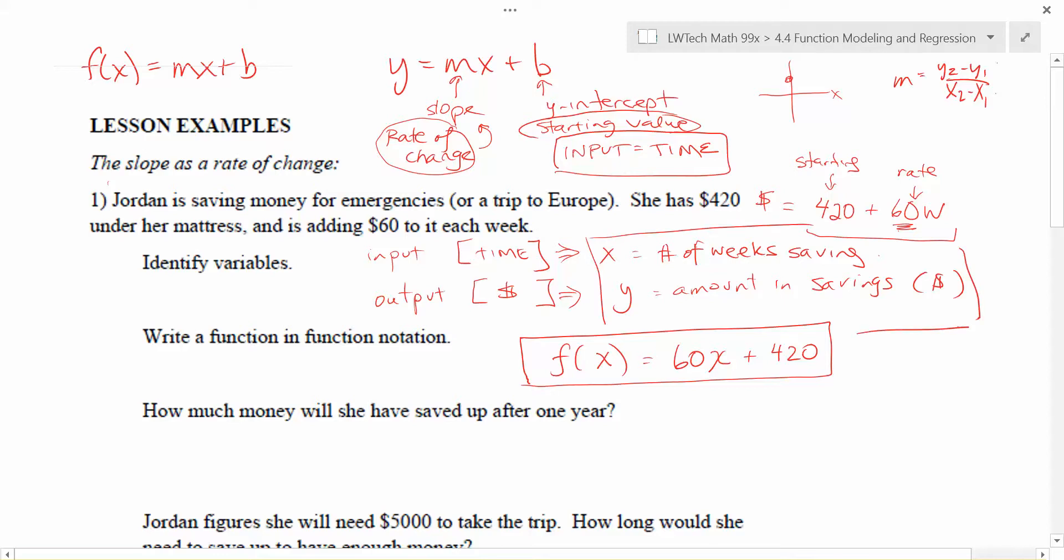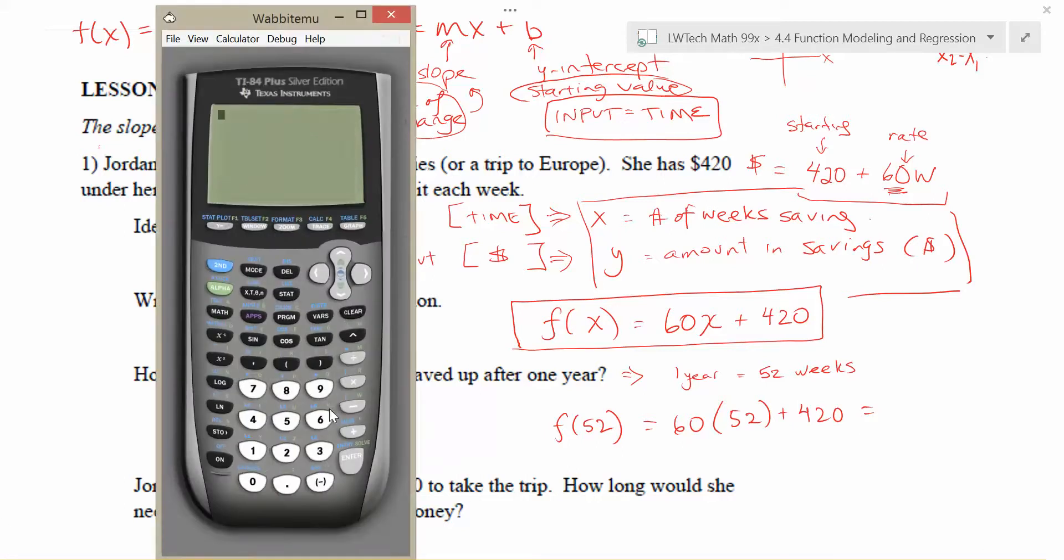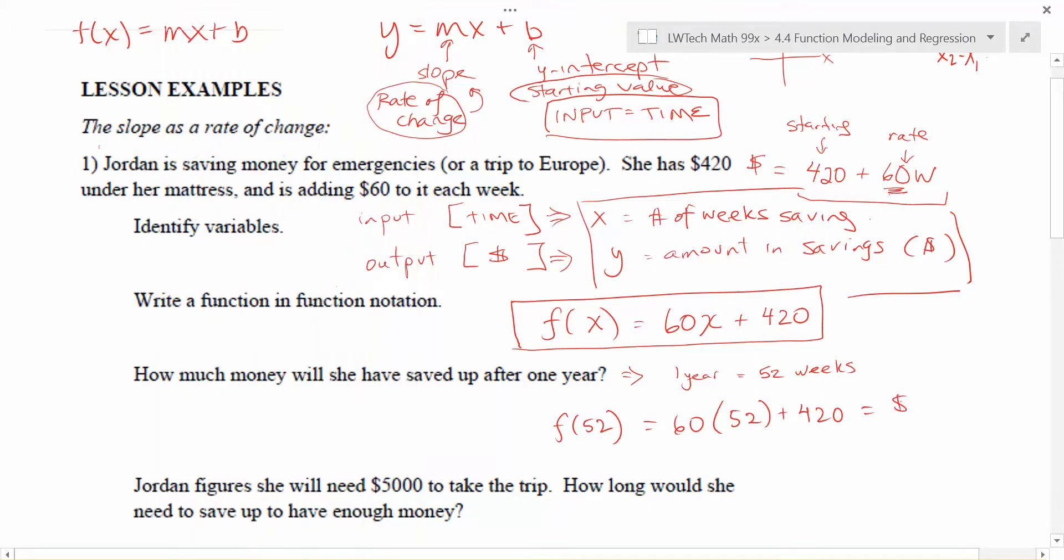Once you have a function, you can use it to evaluate or find values. You can also use it to solve or make predictions. The next question asks us, how much money will she have saved up after a year? Well, if x is the number of weeks, then one year means 52 weeks. So we can stick 52 into our function. f of 52 equals 60 times 52 plus 420, and then we can figure that out on our calculator. 60 times 52 plus 420. So $3,540 is how much money Jordan will have saved after one year. This idea of being consistent with units is really important.